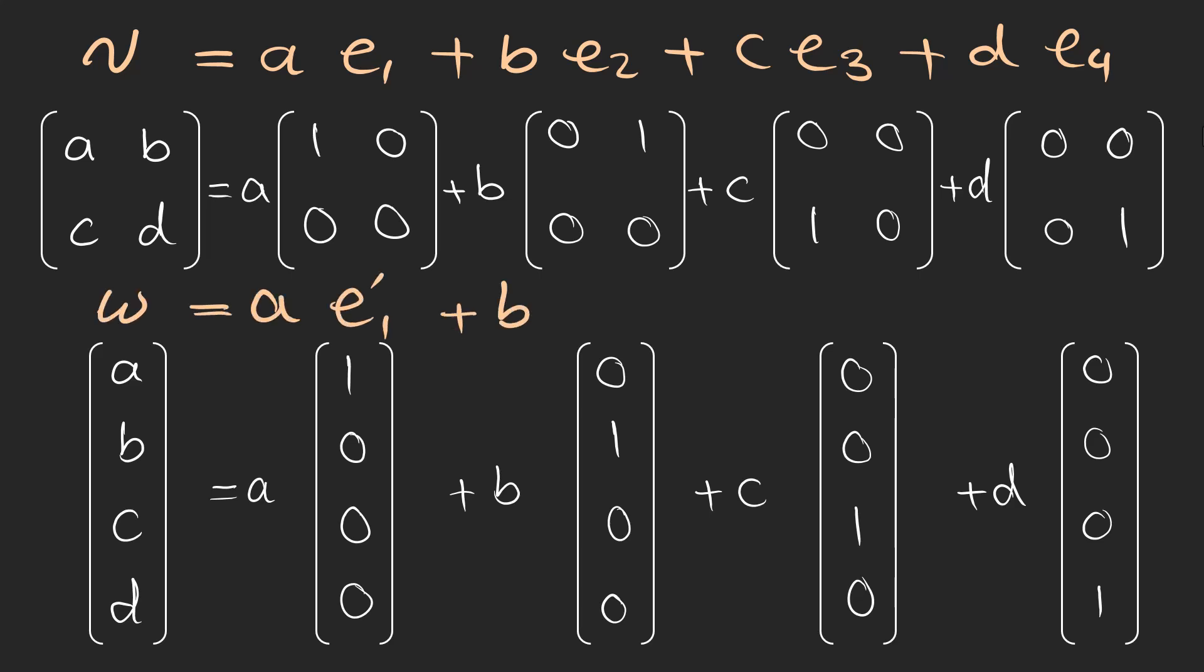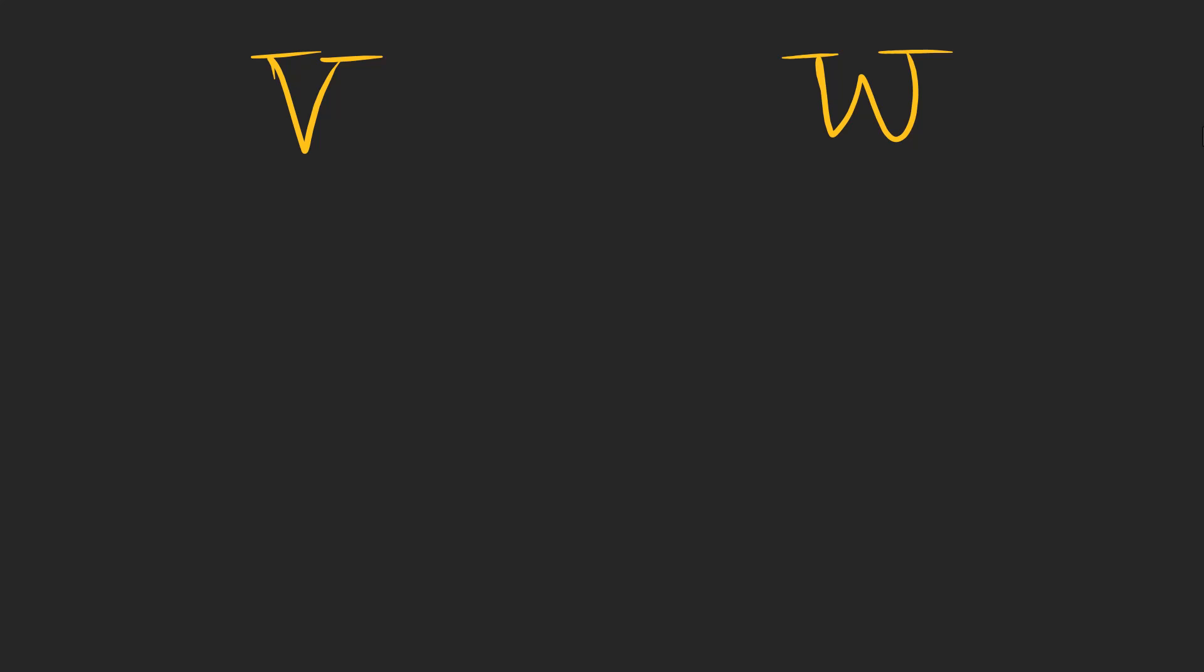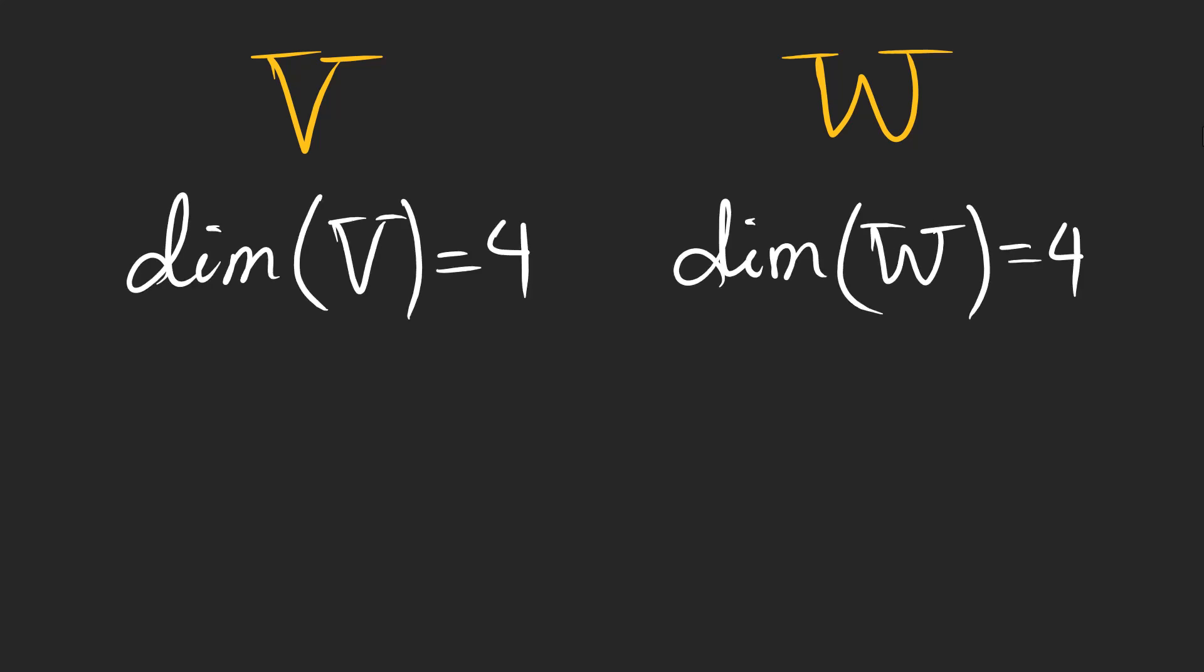And also, the second vector space can be spanned by these primed basis vectors. Pay attention that for both of these vector spaces, we have four basis vectors. So, we have two vector spaces V and W, for which the dimensions are both four. Let me remind you that the dimension of a vector space is the number of vectors in any basis of the vector space.